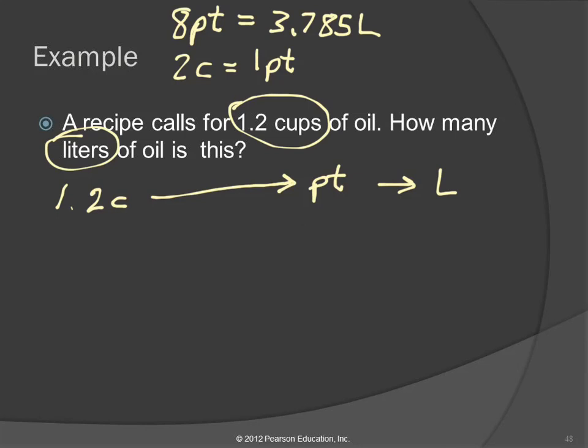So now that we've got our path, cups to pints to liters, we can write our equation. 1.2 cups. We have two arrows. That means we have two conversion factors. Cups to pints to liters. Getting the path, the map, is the key point. Once you get that, it's a matter of following a pattern and putting things in the right place. Below pints, I'm going to write cup because I want those two cups to cancel out. Below liter, I'm going to write pints because I want those guys to cancel out.